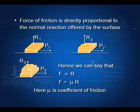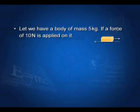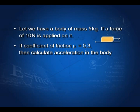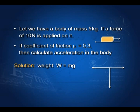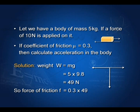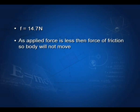Putting a coefficient of proportionality μ, we get F = μR. Let's solve a numerical. A body of mass m = 5 kg has a force of 10 N applied on it, and the coefficient of friction between the two surfaces is 0.3. Weight W = mg = 5 × 9.8 = 49 N. Force of friction F = μR = 0.3 × 49 = 14.7 N. Since the applied force of 10 N is less than 14.7 N, the body will not move — this is a situation of static friction.